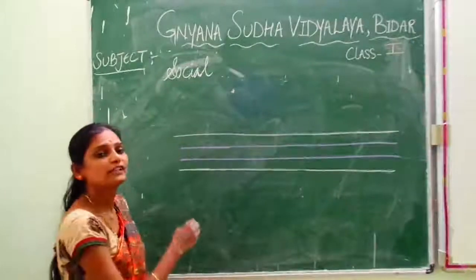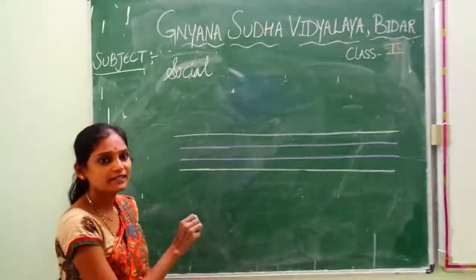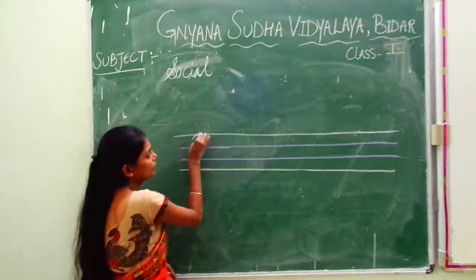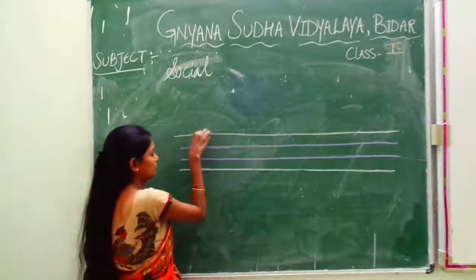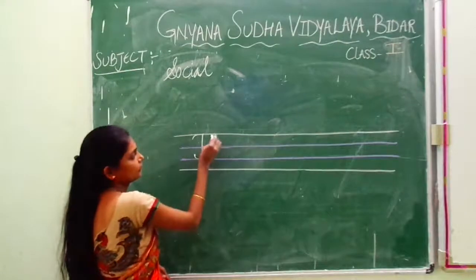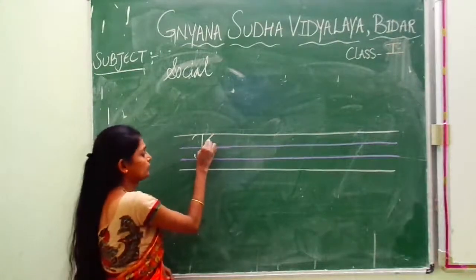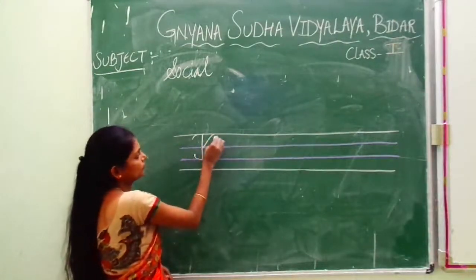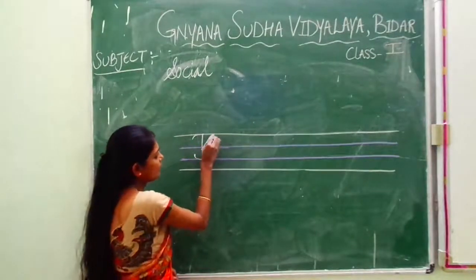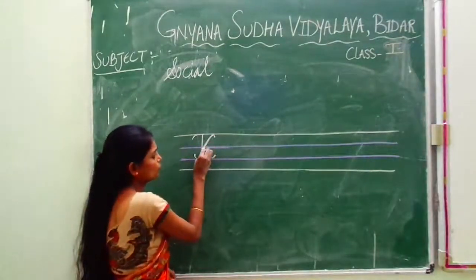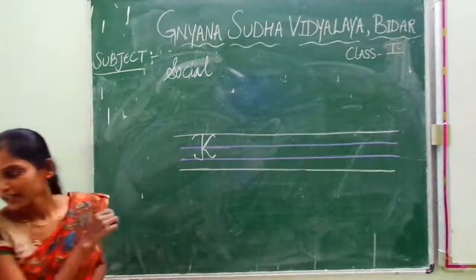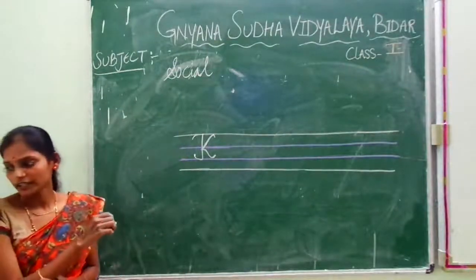Okay children, now we will learn how to write capital cursive K. Just see here, that's the pink line. Let's come down like this. See carefully how I am writing — in the same way you need to write it. This is called capital cursive K.